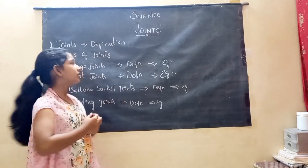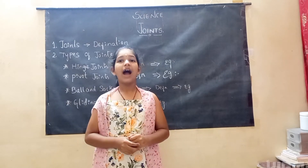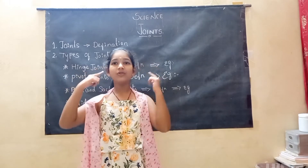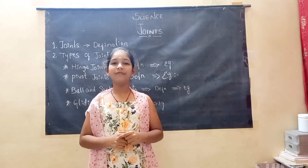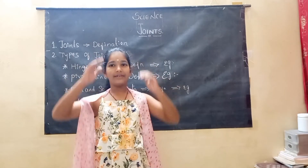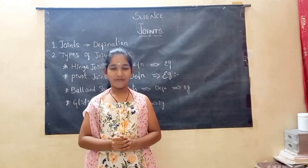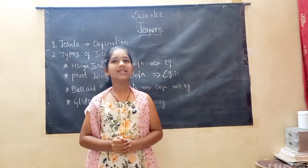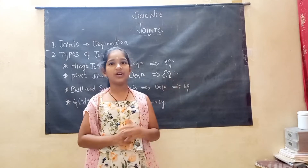Now we will go for our next joint, that is pivot joint. Our pivot joints are found on top of our spine. Our head moves from side to side because our head rests on our pivot joint. The example for pivot joint is our head.